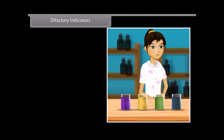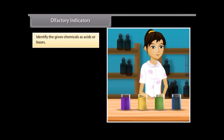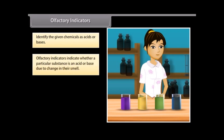Olfactory indicators. Suppose you are given four chemicals and asked to identify them as acids or bases. How will you do it? We have olfactory indicators, which indicate whether a particular substance is an acid or base due to a change in their smell. They are used in the laboratory by a process called olfactory titration.